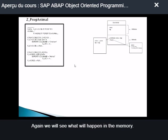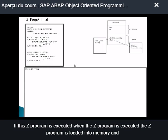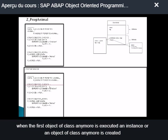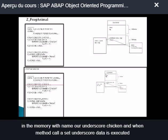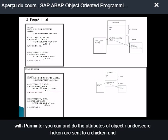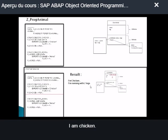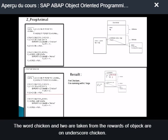We will see what happens in memory when this Z-program is executed. When the Z-program is executed, the Z-program is loaded into memory. When the first object creation of class animal is executed, an instance of class animal is created in memory with name r_chicken. When method set_data is called with parameters 'chicken' and 'two', the attributes of object r_chicken are set to 'chicken' and 'two'. When method run is executed, the result is: 'I am chicken, I am running with two legs.' These values are taken from the attributes of object r_chicken.